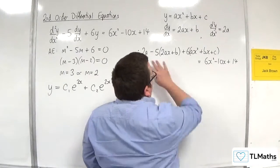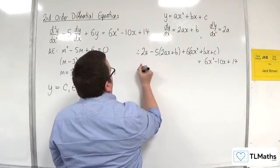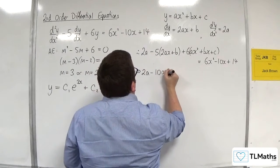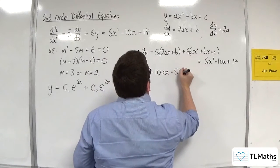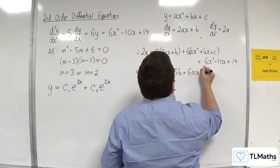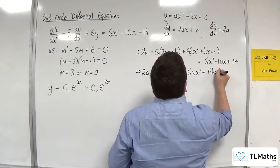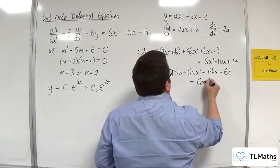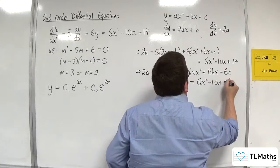Okay, so I'm going to expand out the left-hand side. 2a, take away 10ax, take away 5b plus 6ax squared plus 6bx plus 6c is equal to 6x squared, take away 10x plus 14.